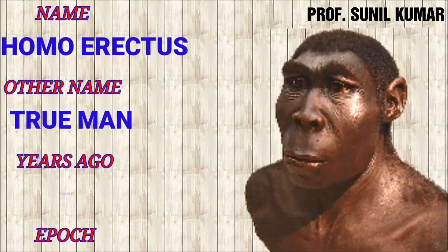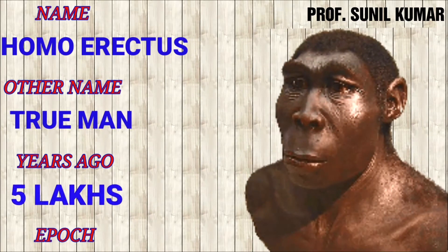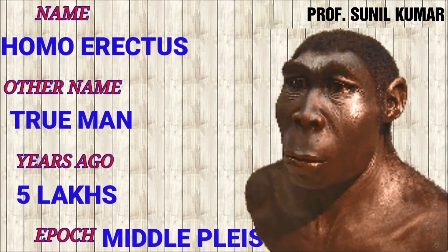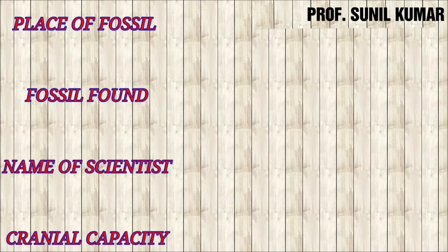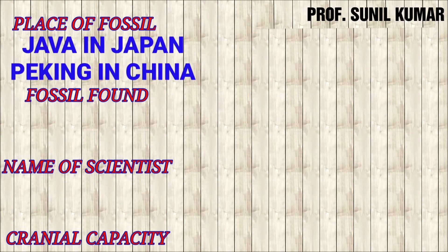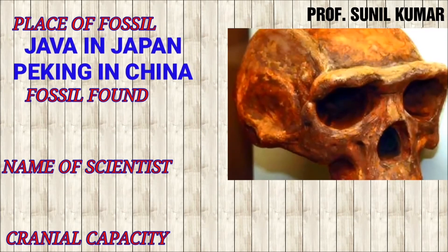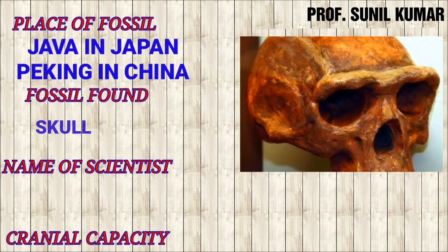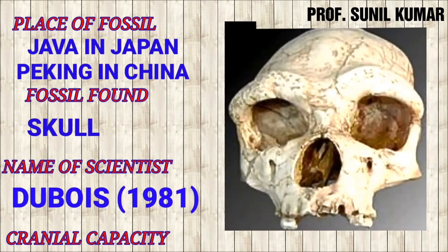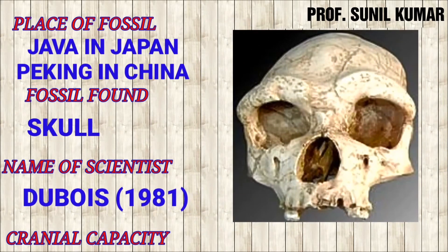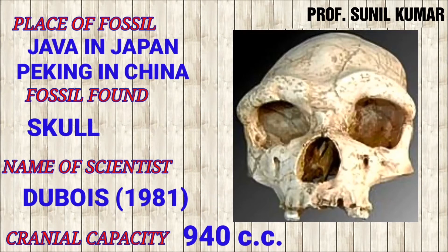Next we have Homo erectus — as the name suggests, they walked erect and are called true men. They lived around 5 lakh years ago in the middle Pleistocene epoch. They were bipedal in nature. The fossil was found in Java, and also in Peking, China. The skull was the fossil discovered, and the scientist was Dubois in 1891. Their cranial capacity was around 940 cc, higher than Homo habilis.